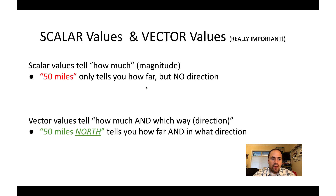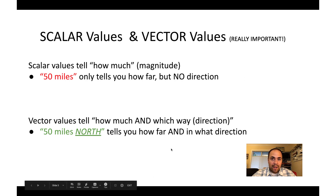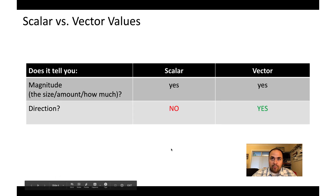Before we do that, there are two types of values we need to talk about that are really important in physics: scalar and vector values. Scalar values tell you the how much, or magnitude. For example, I might tell you I went 50 miles — that tells you how far, but not where. Vector values have an additional piece of information: they tell you a direction as well. So I might say 50 miles north, which tells you not only how far but also the direction. Scalar values only provide a magnitude; vector values provide a magnitude and a direction.